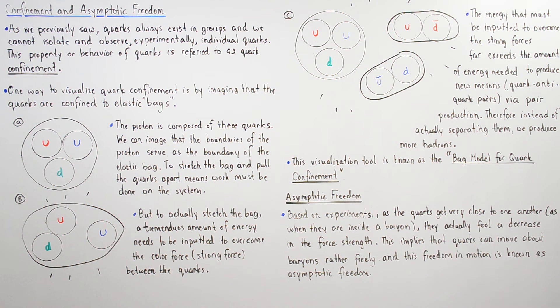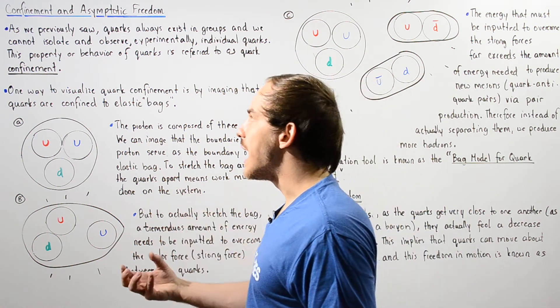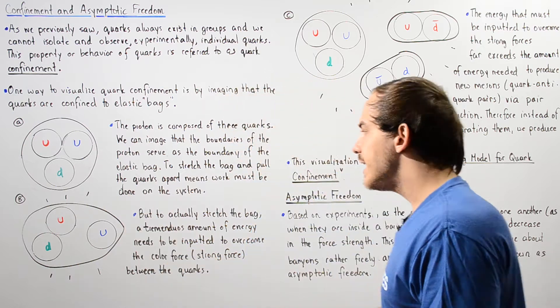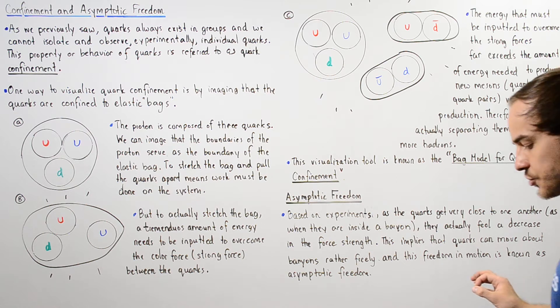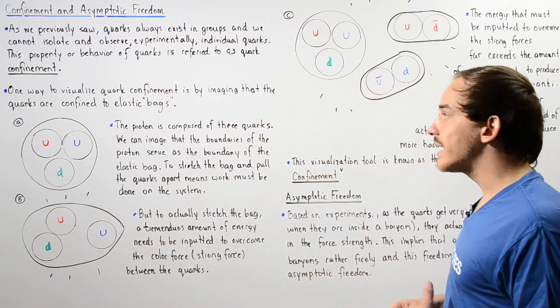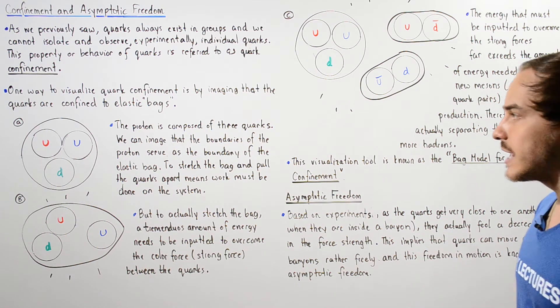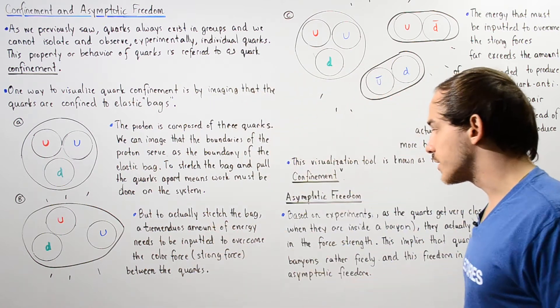This method of visualizing quark confinement is commonly known as the bag model for quark confinement. One other concept that I want to discuss in this lecture briefly is known as asymptotic freedom of our quarks.